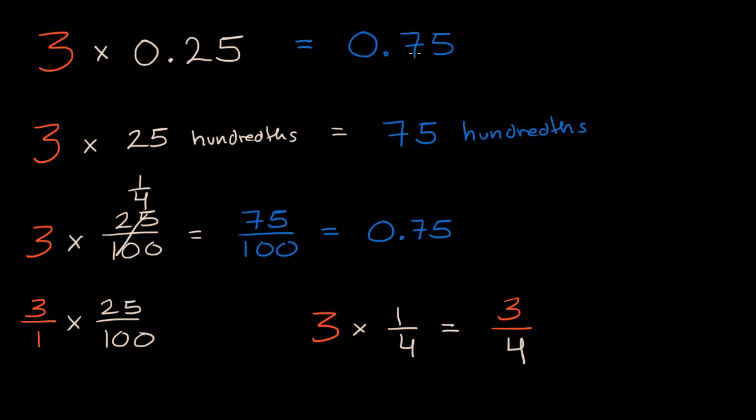Now if someone wanted it written out as a decimal, you might know that 3 fourths can be expressed as 75 hundredths, which in general is a good thing to know. Now let's tackle slightly more complicated examples. So let's say we wanted to figure out what 0.4 times 0.3 is going to be equal to. Pause the video and see if you can compute this.